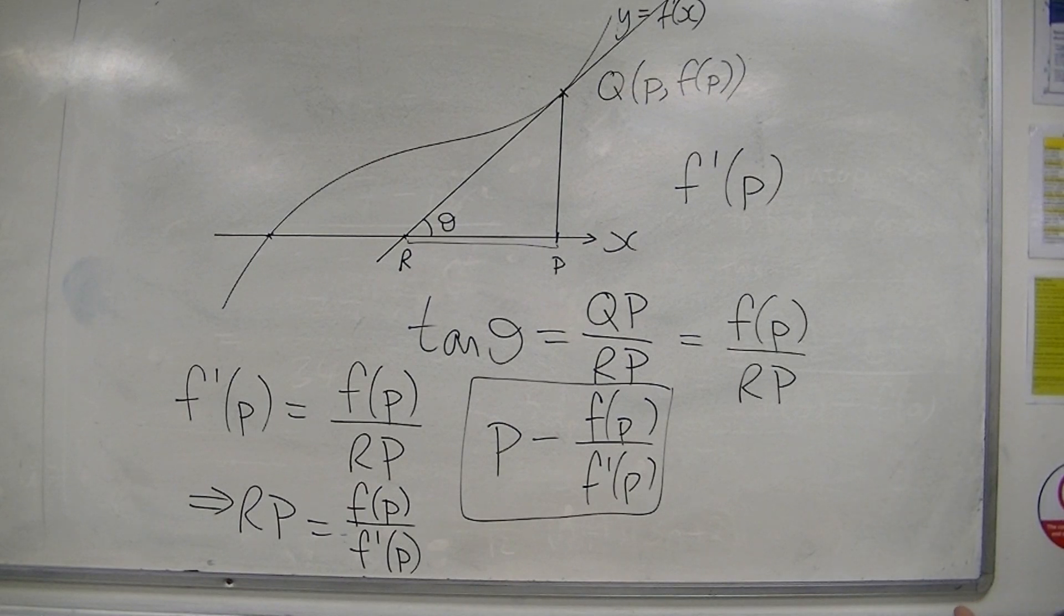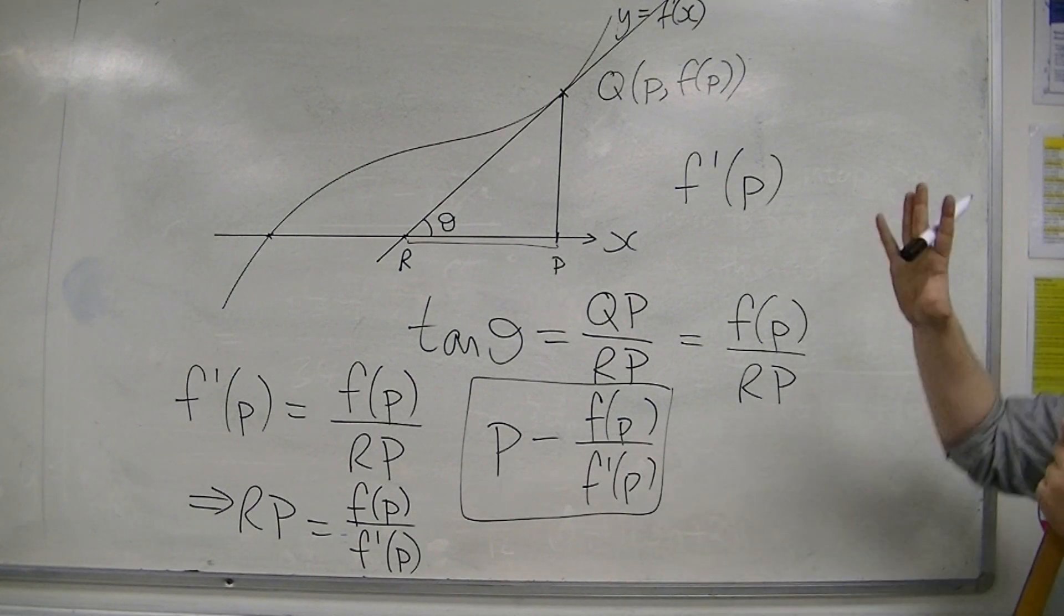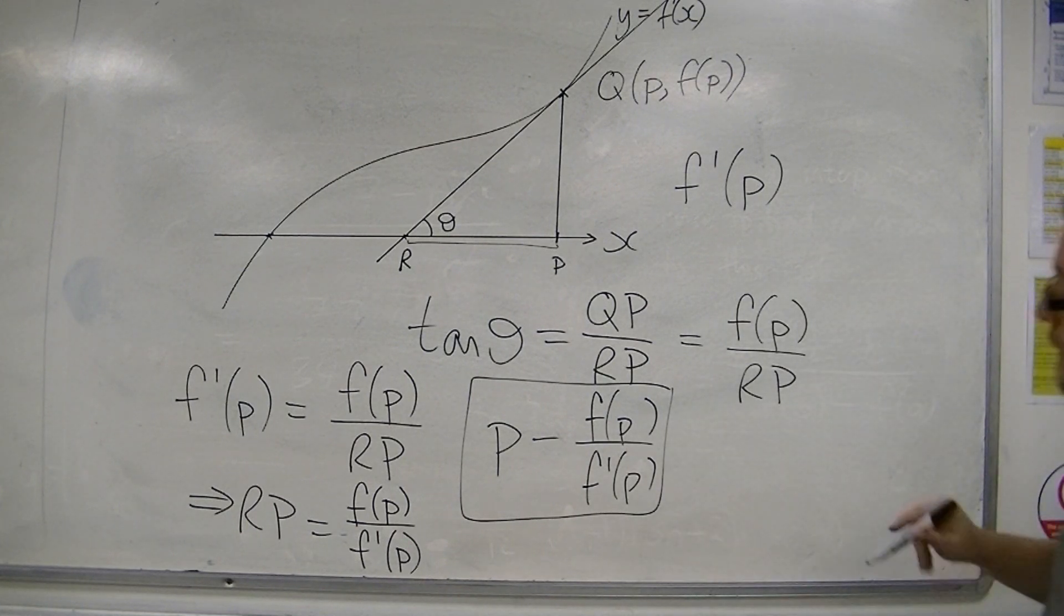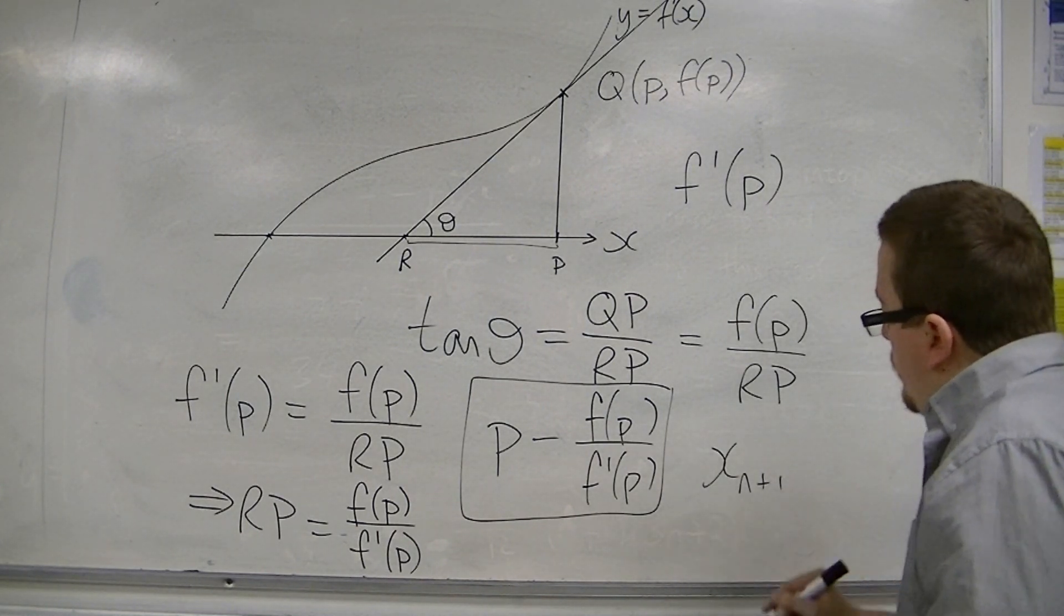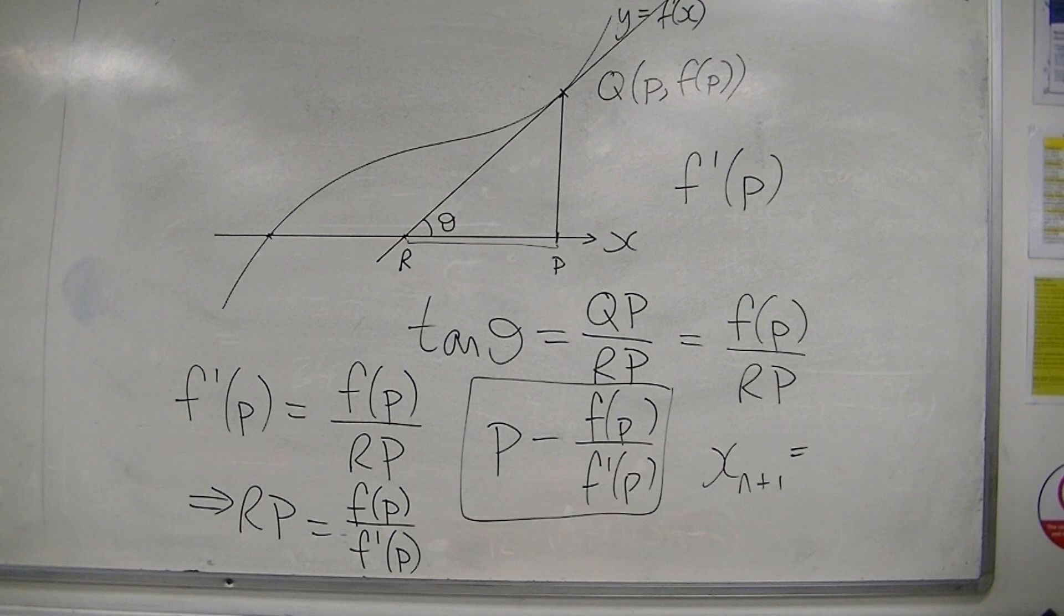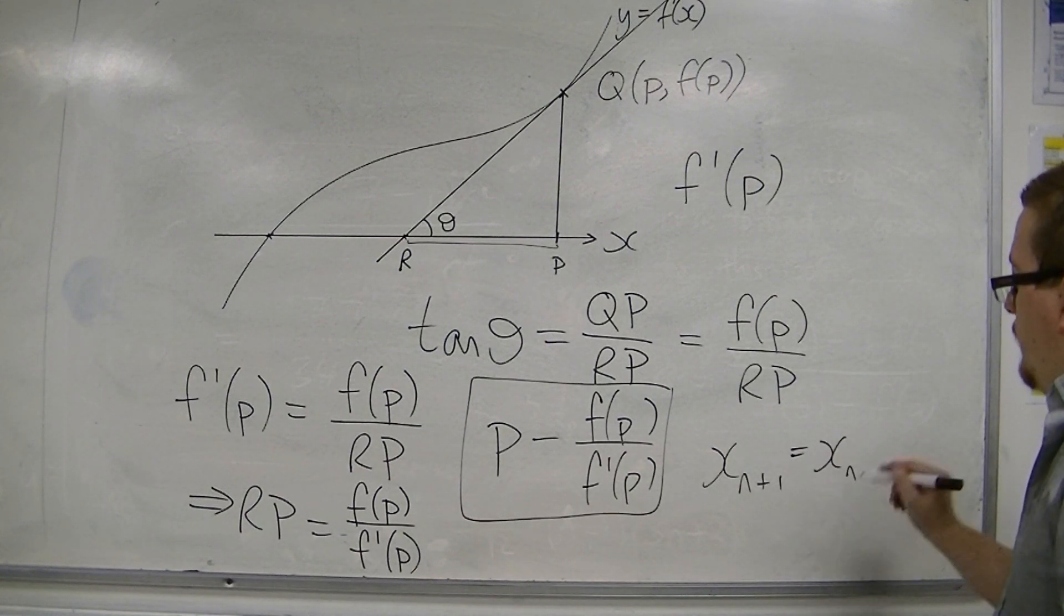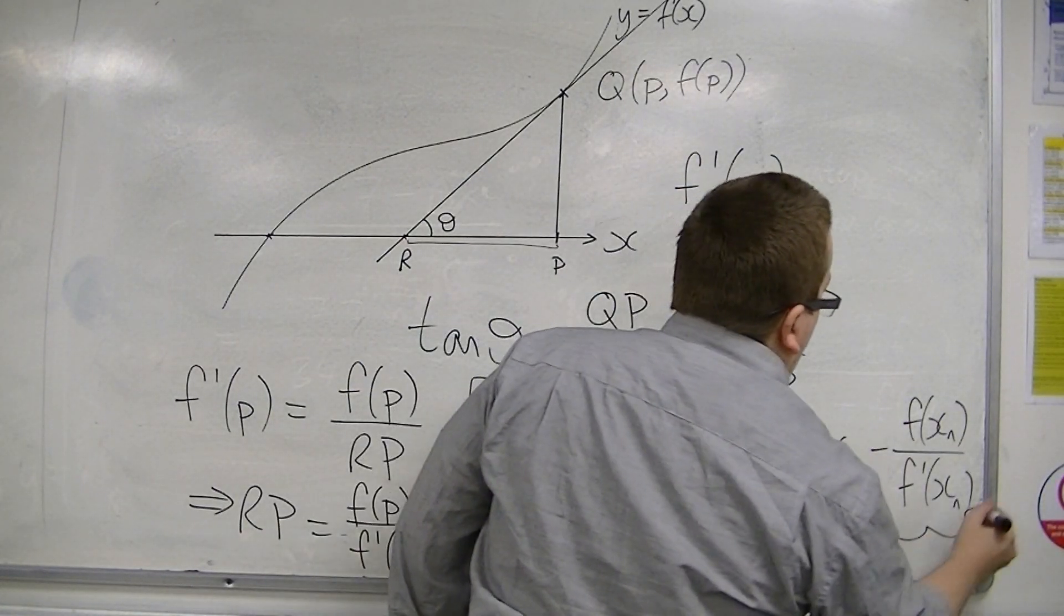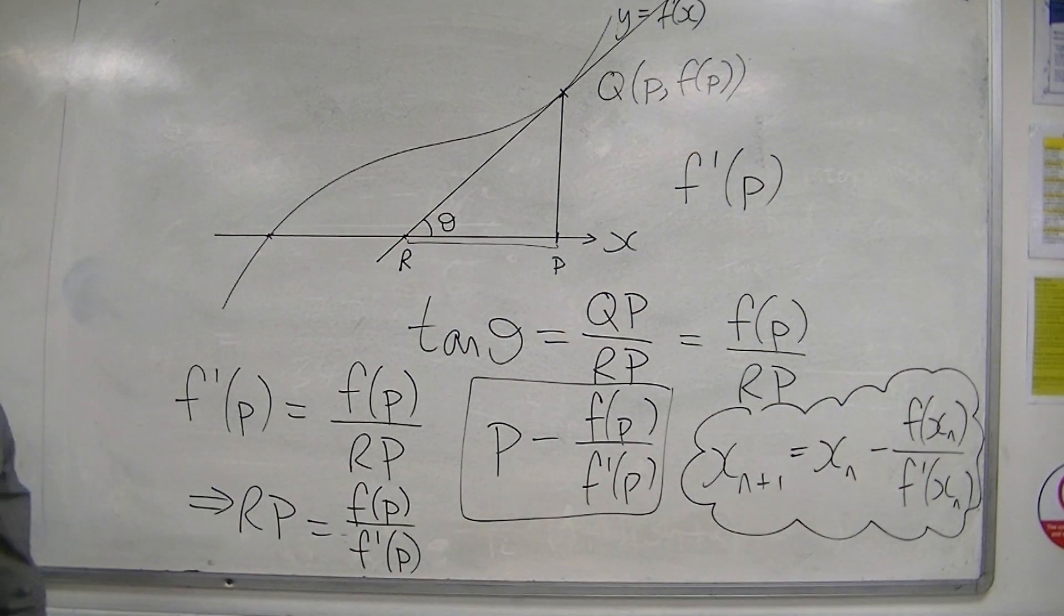Now if I put that as an iterative formula, then that will allow me to home in after several attempts at this. So if I turn that into an iterative formula, then it would become x of n plus 1, the new point that I'm looking at, will be equal to the old point take away f of the old point divided by f prime of that old point. And this is the Newton-Raphson iterative formula that we want to be able to use.